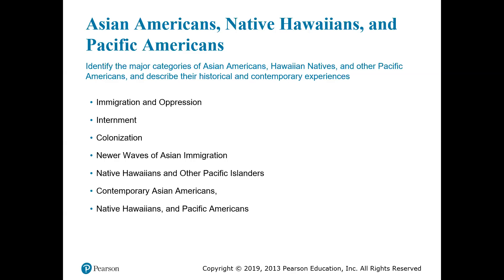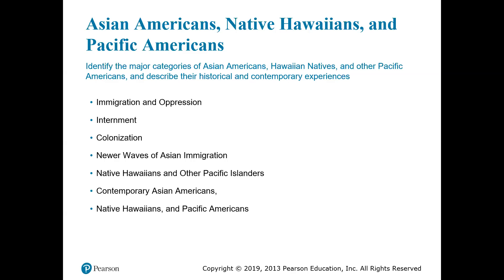Although Japanese-Americans experienced high levels of prejudice and discrimination almost as soon as they arrived, their internment in U.S. concentration camps during World War II remains the central event of the Japanese-American experience. After the bombing of Pearl Harbor in 1941, anti-Japanese sentiment soared. Japanese-Americans were forcibly removed to concentration camps on remote military bases with barbed wire fences and guard towers, where they remained for more than two years. During their internment, most Japanese-Americans lost their residences, businesses, and anything else they had owned.